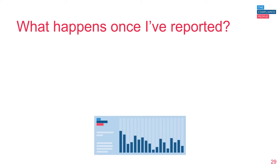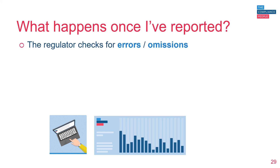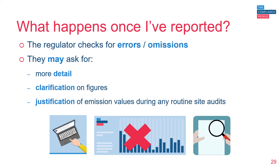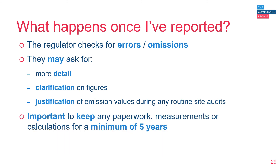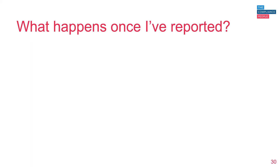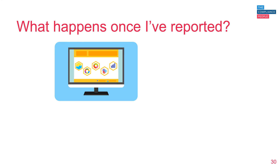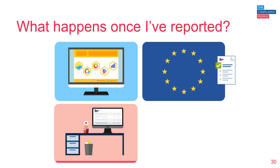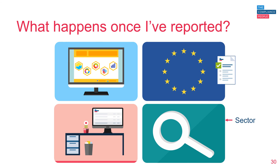So what happens once you've reported? You've submitted the required data onto the online reporting system as required by your regulator. Once submitted, the regulator will check for any errors or omissions and may get back to you wanting more detail or clarification around particular figures. They may also ask for justification of omission values during any routine site audits or inspections. It's really important that you keep any paperwork or documents — including details of measurements or calculations — for a minimum of five years, as detailed in the regulations. The data submitted is also used in research and to fulfil reporting requirements, and is made publicly available online, so it's possible to search by sector or find out the emissions data for particular businesses.